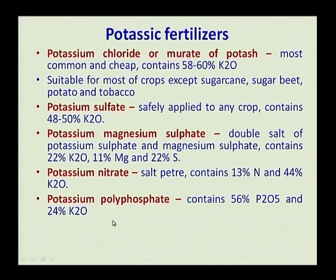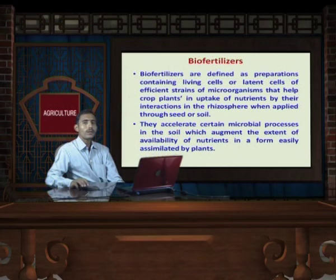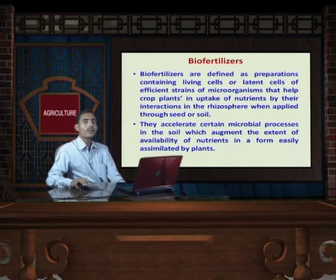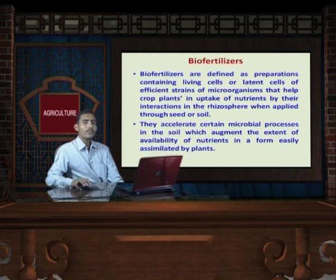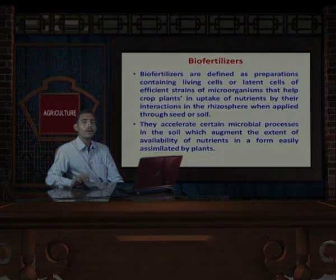These are the different fertilizers. Regarding application: nitrogen must be applied in split doses. But phosphorus and potassium must be applied at the time of sowing because they are not readily available and most of the applied fertilizer is fixed in the soil. Applying at sowing ensures it is available to the seed and then to the plant roots.